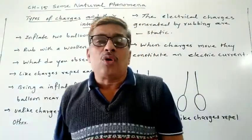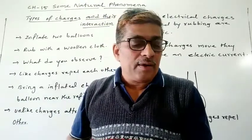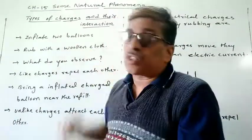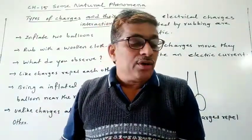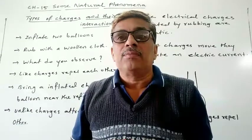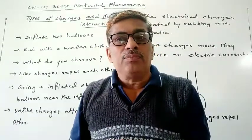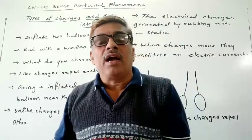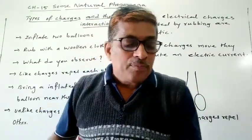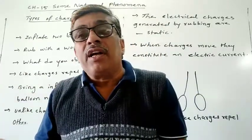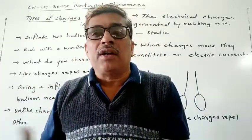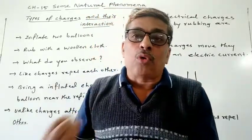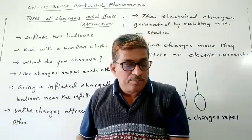How many types of charges are there? And how will they react with each other? There are basically two types of charges — one is positive and another one is negative. So, like charges and unlike charges. These charges interact with each other. Interaction means they react with each other and produce a result.